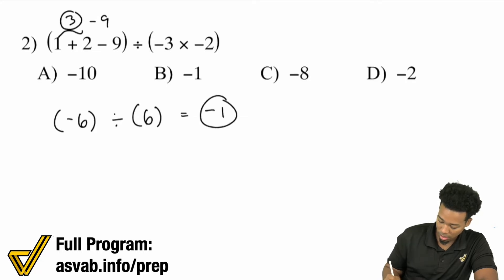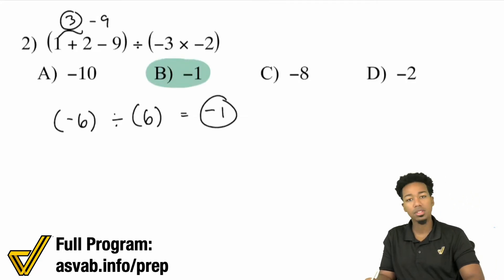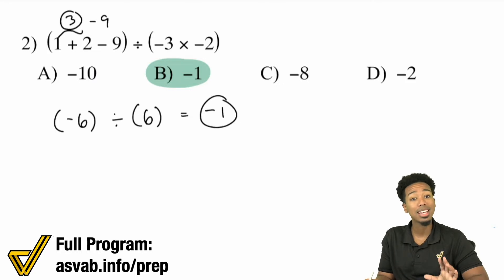So we have negative 6 divided by 6, which is negative 1. Take care of it one step at a time — analyze briefly before you begin, just 5 to 10 seconds.